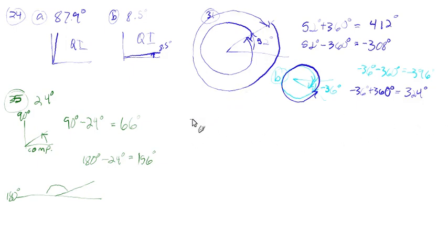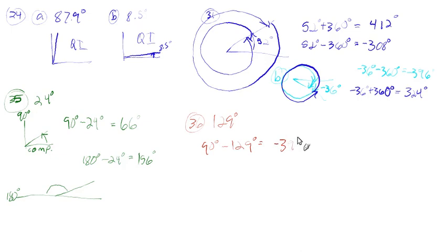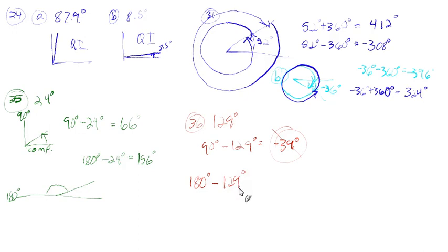Number 36: 129 degrees. For the complement: 90 minus 129 gives negative 39°, which is not a positive angle, so there is no complement. For the supplement: 180 minus 129 equals 51 degrees — that's positive, so 51° is the supplement. The key point is complementary and supplementary angles must both be positive.